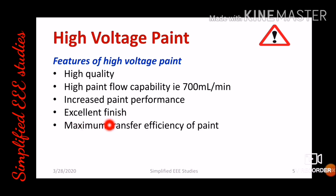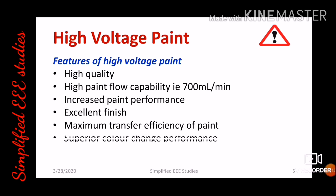Maximum transfer efficiency of the paint is achieved, and painting is done uniformly — the system performs efficiently. Superior color changing performance is also possible with the high voltage painting system. Additionally, reduced cycle time is another advantage of the high voltage painting system.